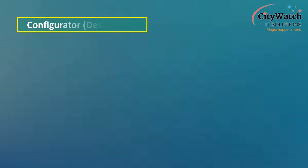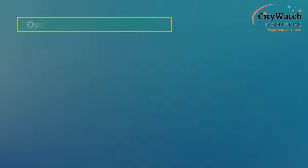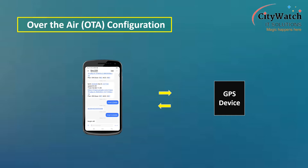Generally speaking, there are two ways we can configure a tracking device. One way is to use a configurator offered by the device manufacturer — usually a desktop app that allows users to plug in the device to a computer and set values for different configuration parameters. Another way is through Over-the-Air configuration or OTA configuration, which means we can configure the device even after it's been deployed, as it requires no physical access to the device.